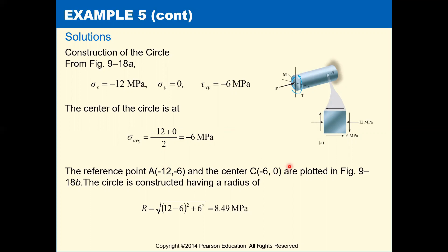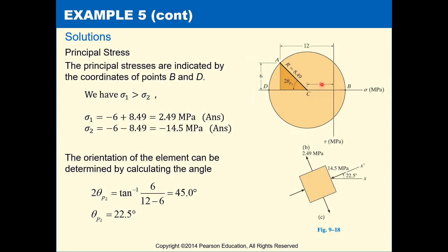So our center is going to be located at negative 6 comma 0. And then our reference point is just going to be sigma x comma tau xy. That's negative 12 comma negative 6. And we can just plot our center and plot our reference point.